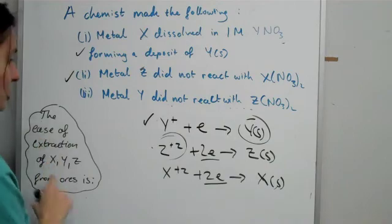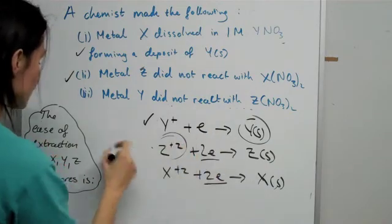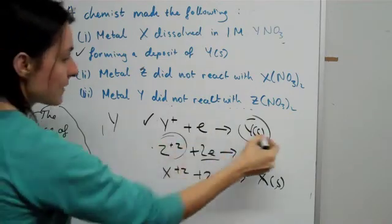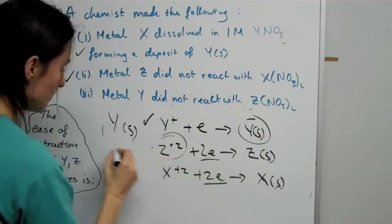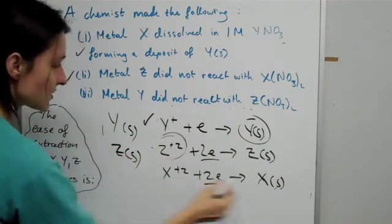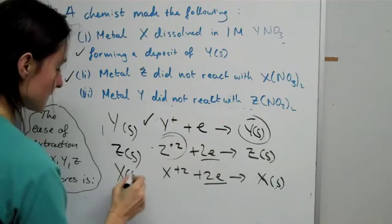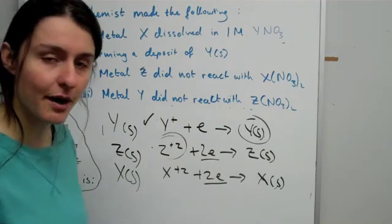So basically, for ease of extraction: this will be the easiest to extract. First it will be metal Y that you extract, then metal Z, and finally metal X as the last priority.